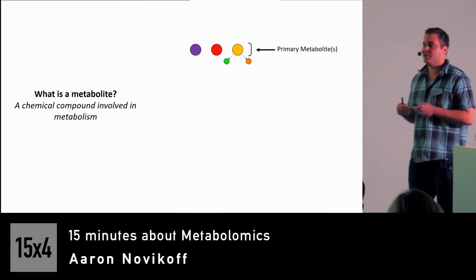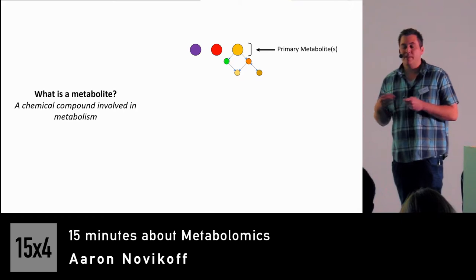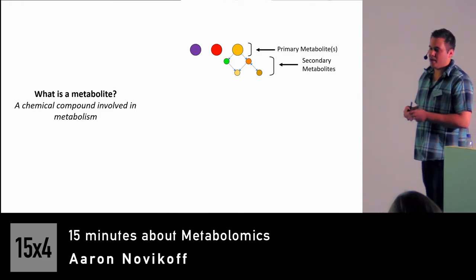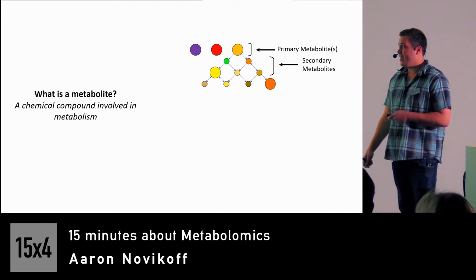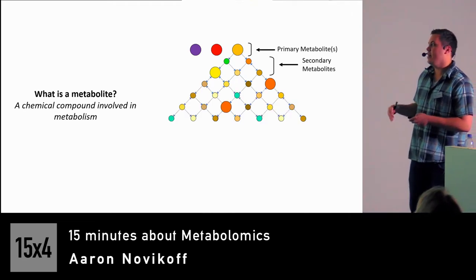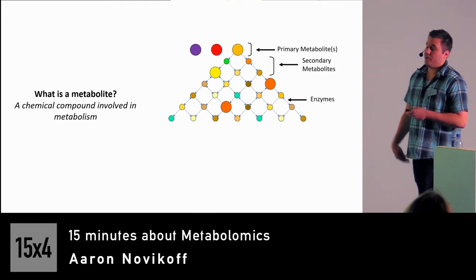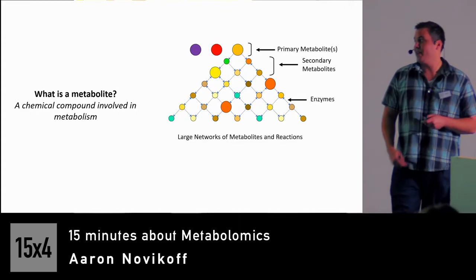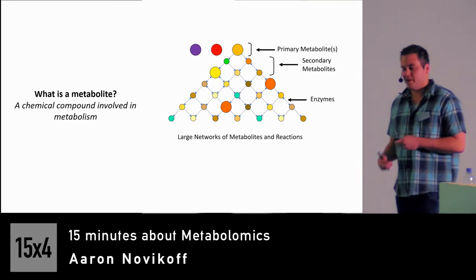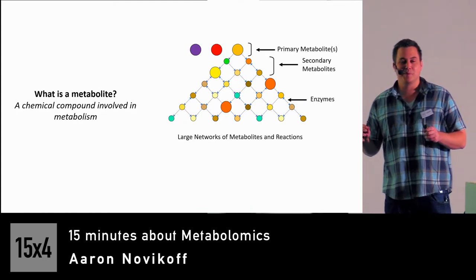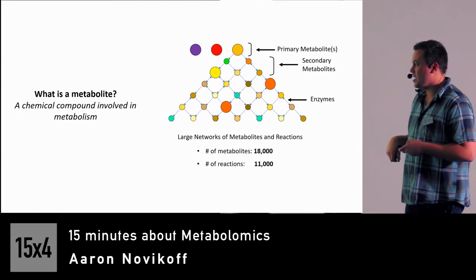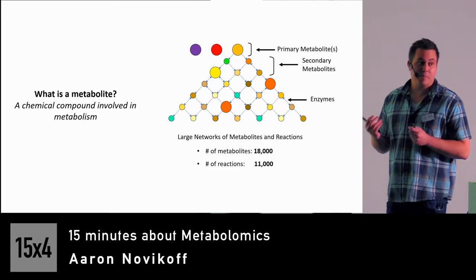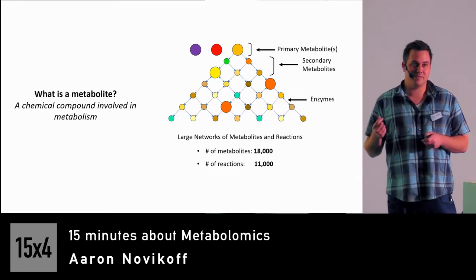Within metabolism, a common theme is interconversion and conversion to smaller, lesser-known metabolites — we call these secondary metabolites, which are useful for completing metabolic processes for specific pathways. As these conversions continue, through the action of enzymes — protein components in the cell — we form a large network. That first map I showed is actually a very simplified version: there are about 18,000 metabolites in the human cell and 11,000 possible reactions.